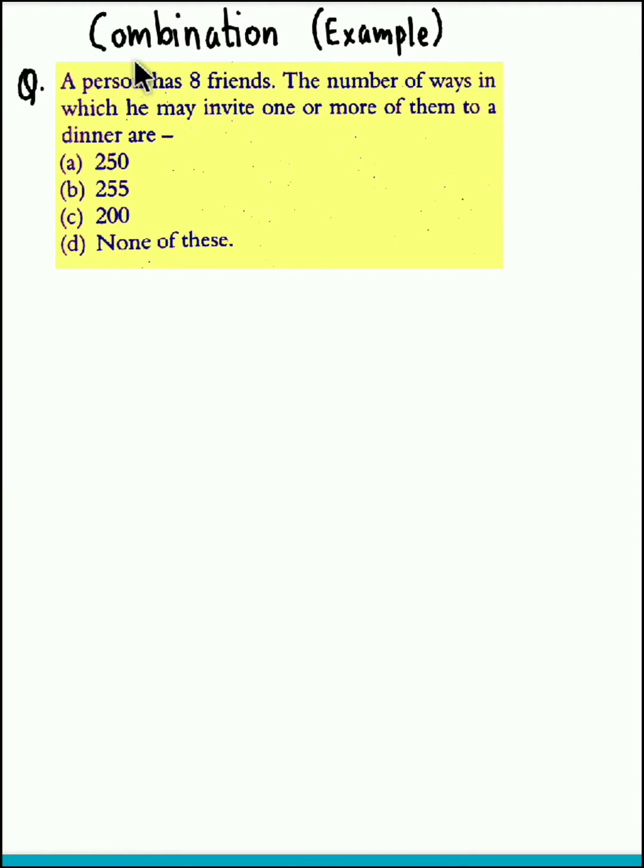Hello and welcome back. We now take an example from the topic combination. The question here is a person has eight friends. The number of ways in which he may invite one or more of them to a dinner are...